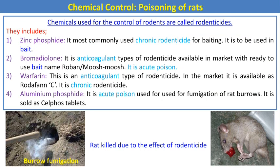Zinc phosphide is an acute rodenticide, mostly available as bait. Bromadiolone is an anticoagulant-type rodenticide available as bait and is an acute poison. Warfarin is also an anticoagulant-type rodenticide and is a chronic one. Aluminum phosphide is mostly used to fumigate rat burrows, available in solid tablet form, and is an acute poison.